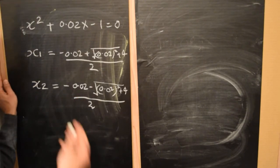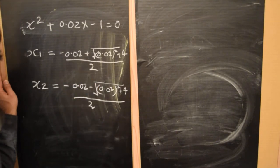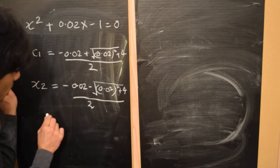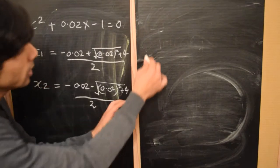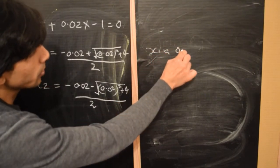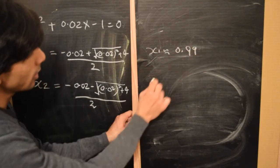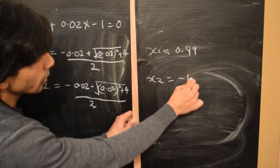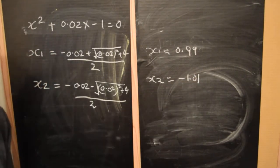Now if you sort of plug in these numbers on your computer or calculator, you'll find that x1 is approximately 0.99, whereas x2 is approximately minus 1.01.